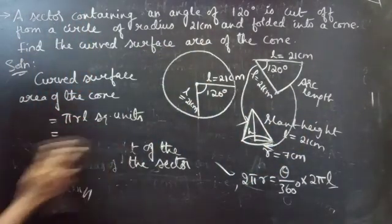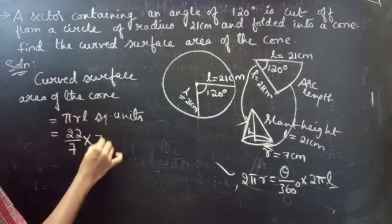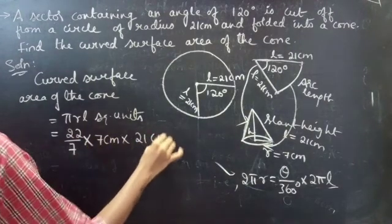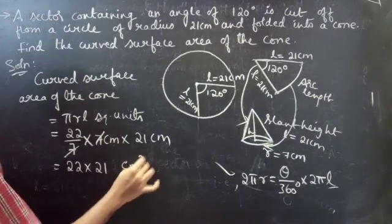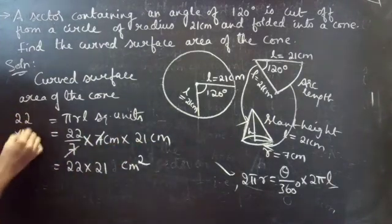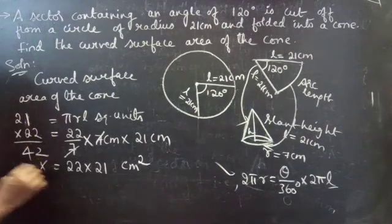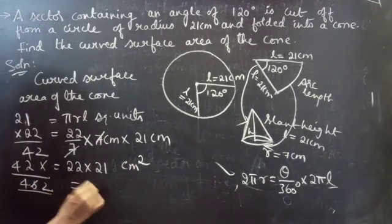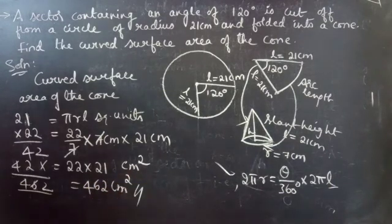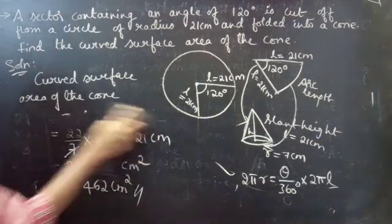This L is transformed to slant height and the arc length is transformed to the circular base. So, curved surface area equals 22 over 7 into radius 7 centimeters into slant height 21 centimeters. The 7s cancel, giving 22 into 21, which equals 462 centimeters squared. Therefore, the curved surface area of the cone equals 462 centimeters squared.